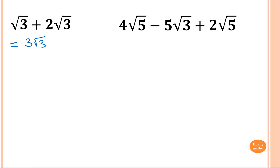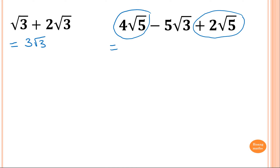Let's do this question: 4 root 5 minus 5 root 3 plus 2 root 5. We look for like terms. The like terms here are 4 root 5 and 2 root 5, so 4 plus 2 is 6, giving us 6 root 5. Then we have minus 5 square root of 3, which has no like term so we just write it out.